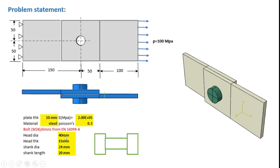As shown here, the head diameter is 40 mm and the head thickness is 15 mm. The shank diameter will be 24 mm, and the shank length will be two times the plate thickness, that is 20 mm. A three-dimensional view of the lap joint modeled in Abaqus is shown here.